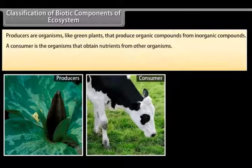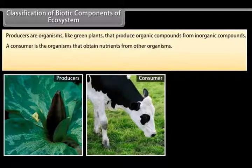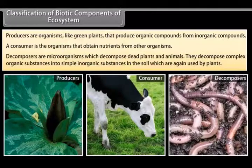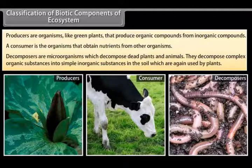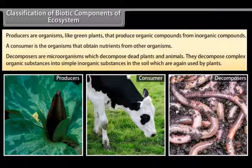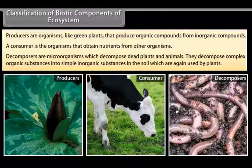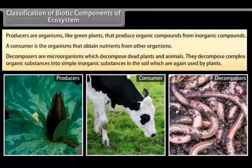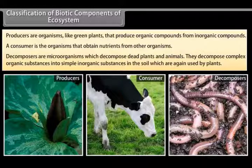A consumer is the organism that obtain nutrients from other organisms. And the decomposers are microorganisms which decompose dead plants and animals. They decompose complex organic substances into simple inorganic substances in the soil which are again used by the plants.